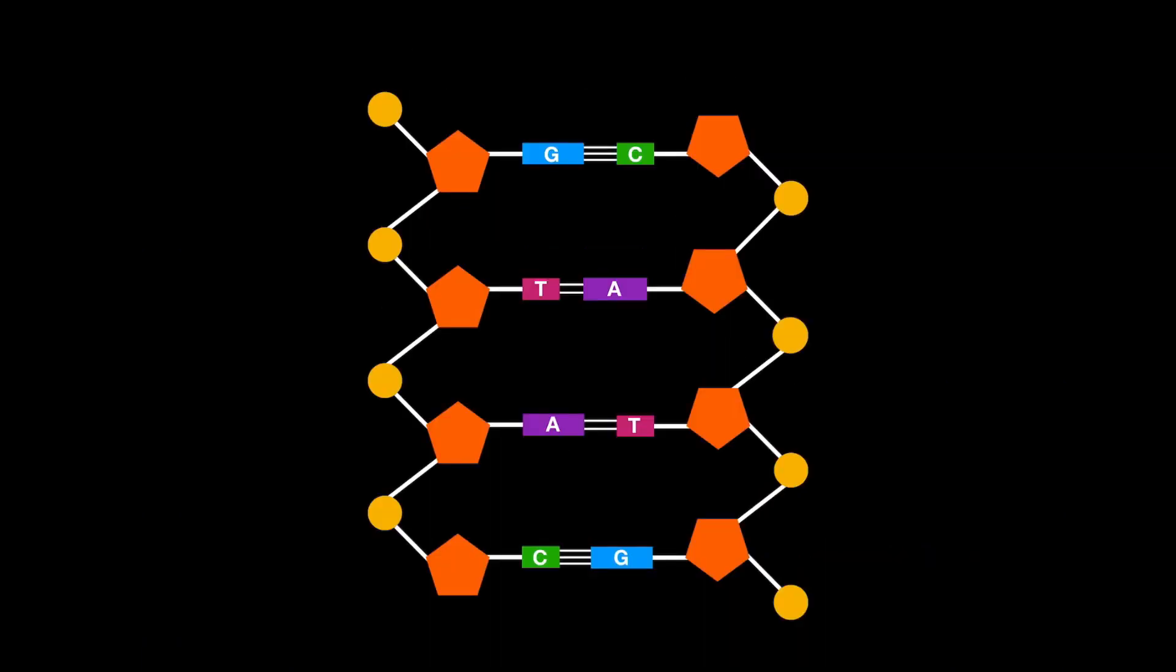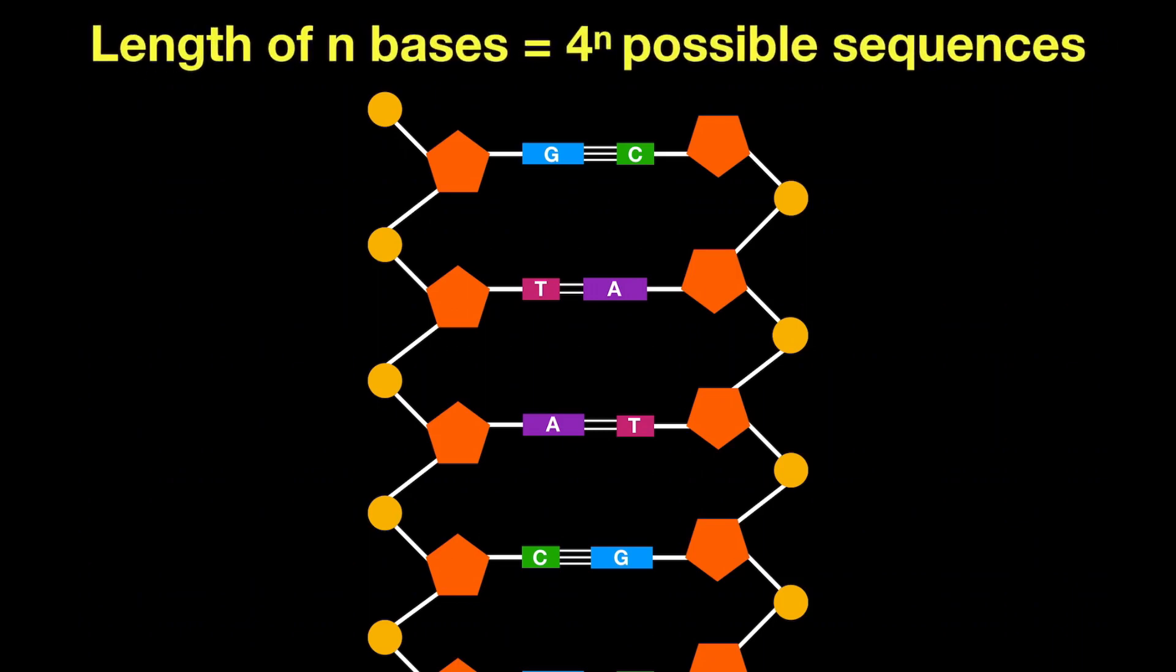So in the end we can generalize to represent the diversity of DNA. If we have a length of DNA that is of n bases, and we have four possible bases with which to make up the sequence in that length, then we have 4 to the power of n possible sequences for that length of DNA.